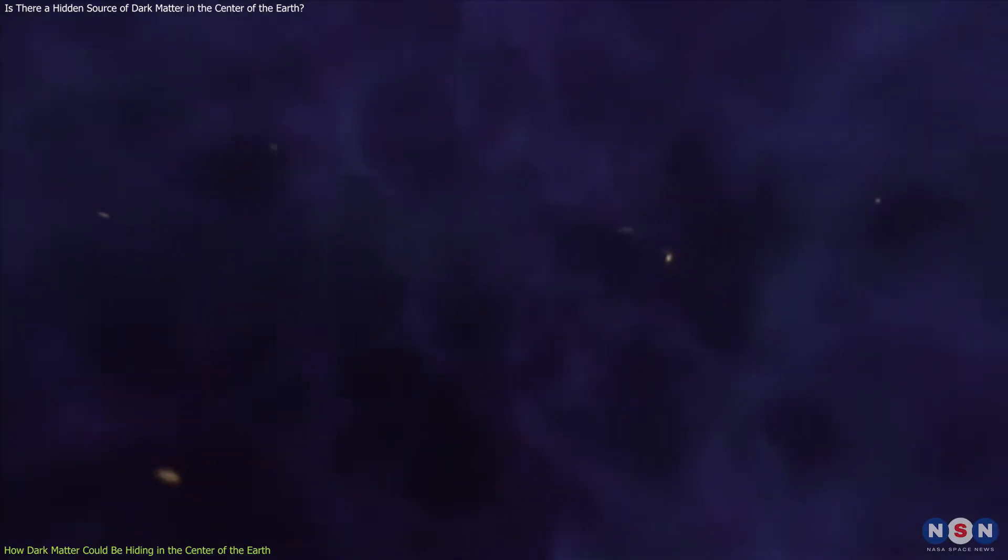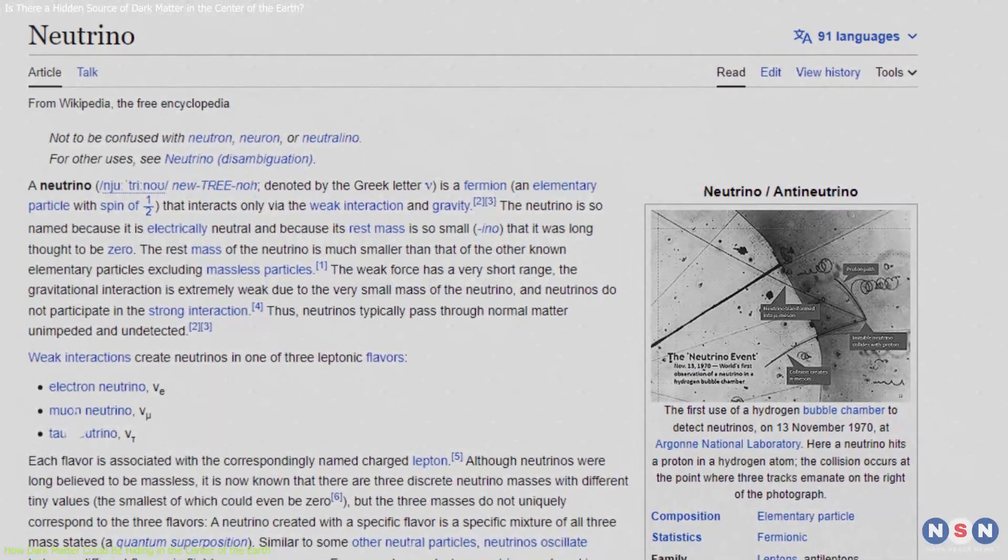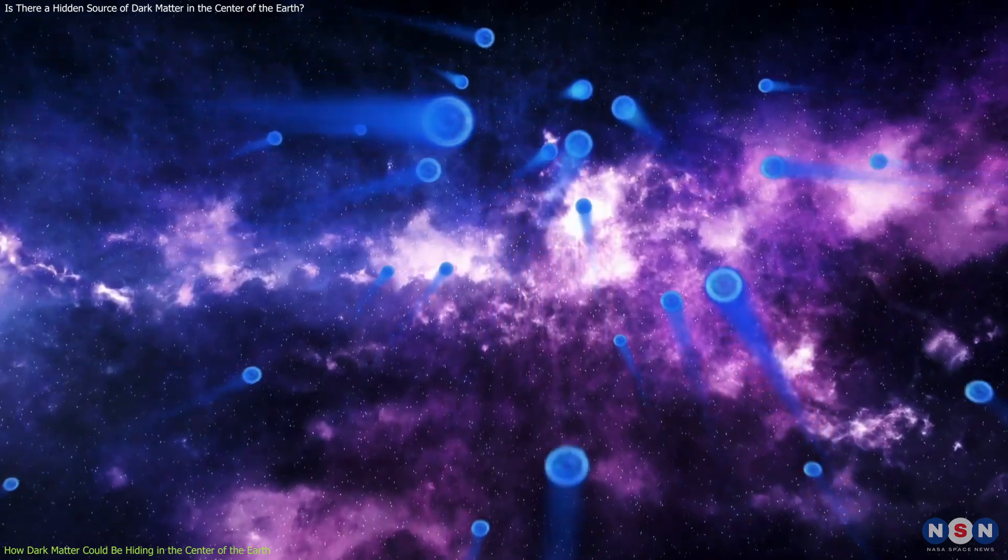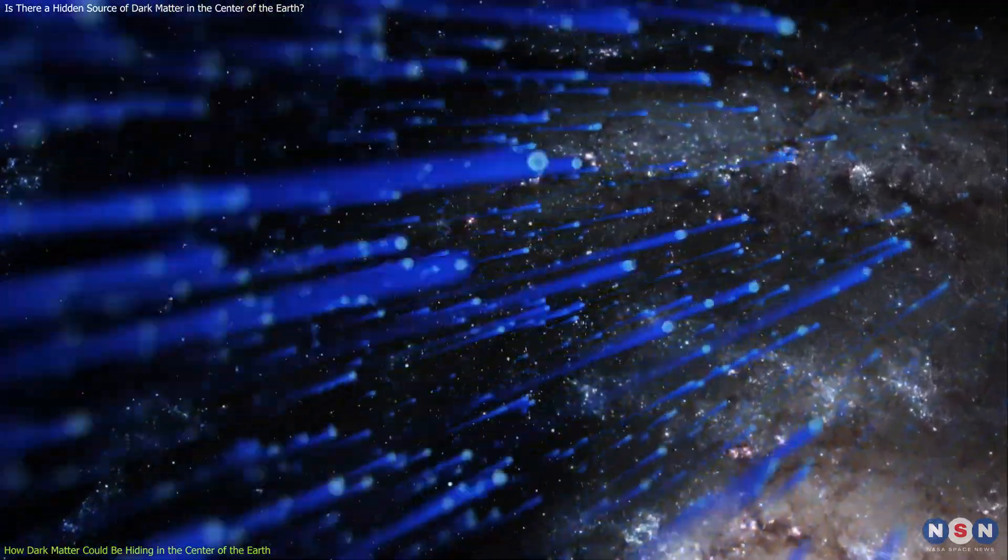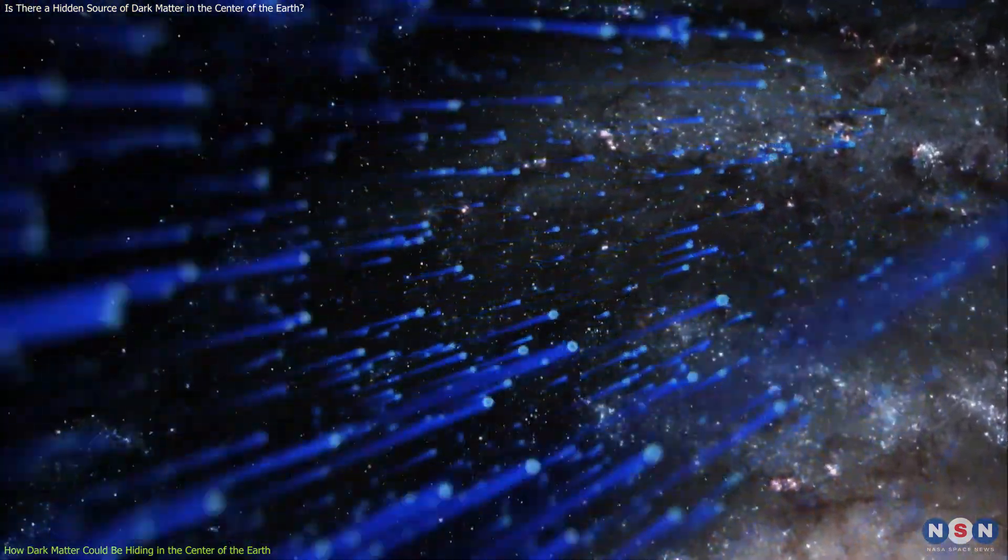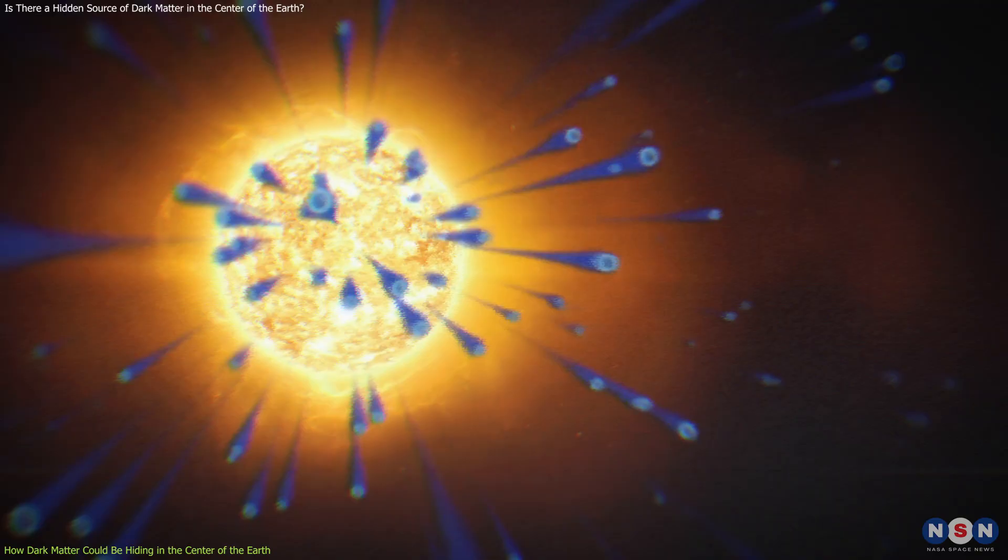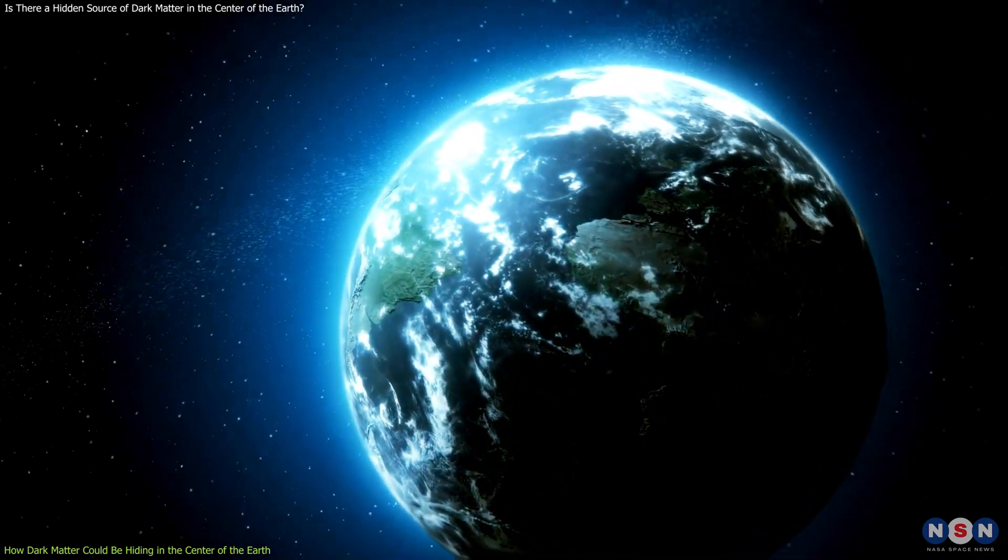There are different types of signals that could result from these collisions, such as gamma rays, x-rays, radio waves, or neutrinos. Neutrinos are especially interesting because they are very weakly interacting particles that can travel long distances without being absorbed or deflected by anything. This means that they can carry information from places that are otherwise inaccessible to us, such as the center of the sun, the core of a supernova, or even the center of the earth.